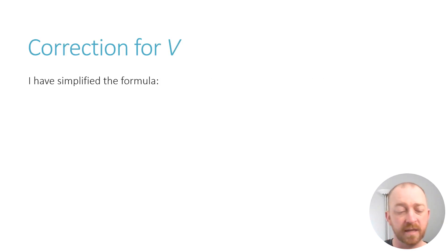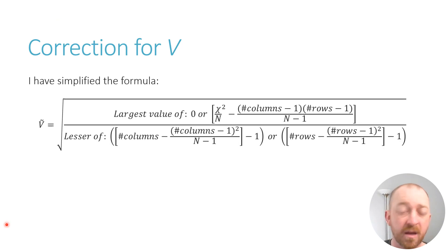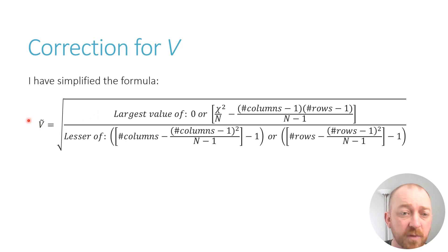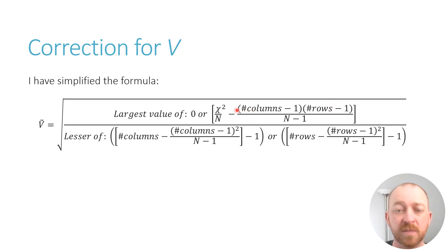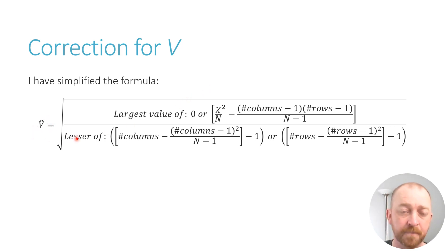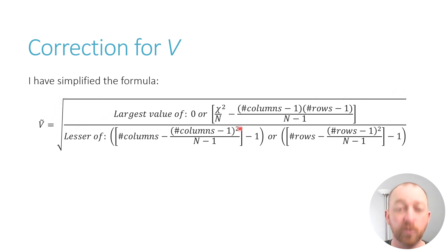Now I'm going to show you the equation I've created based on Bergsma's equation — I've simply adjusted it to make it a little bit more usable. First of all, we have a decision to make: do we use zero or the value in these brackets? You do the math first to make sure this value isn't negative. If it isn't negative you use it; if it is negative you use zero instead, which means your Cramér's V will be zero. This is necessary because it is mathematically possible to get a negative value, and we cannot take the square root of a negative value.